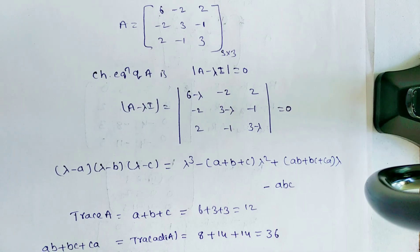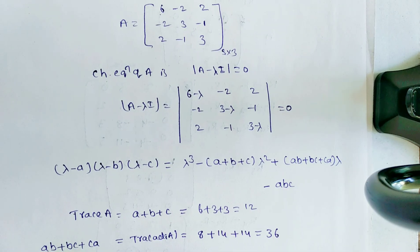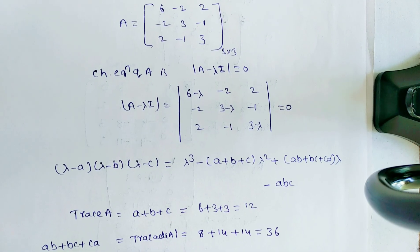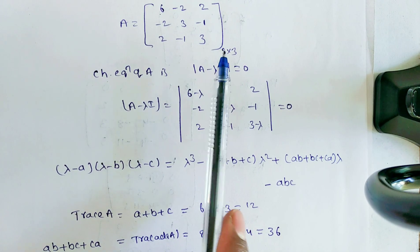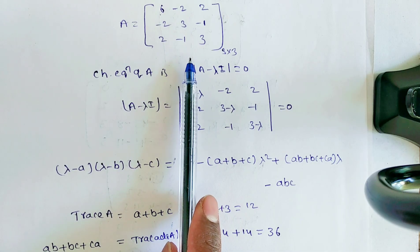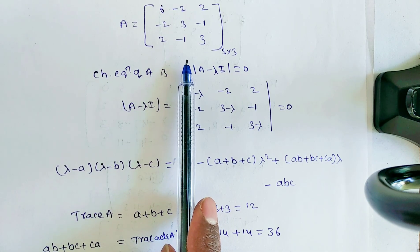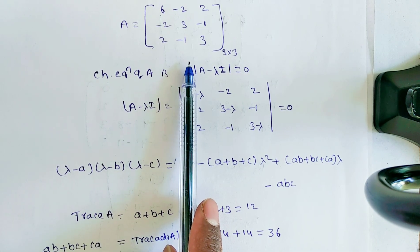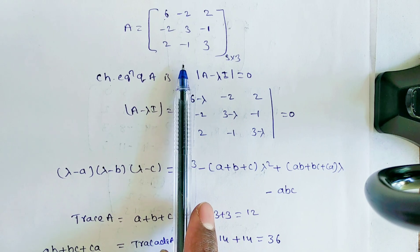Now, ABC is the determinant of A. Determinant of A is quite tough to find directly, so now we will find all these values using the calculator.